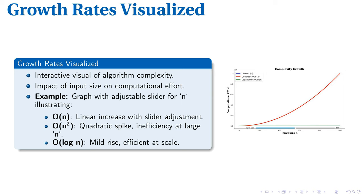Observe the O(N) complexity on this graph — notice the linear incline, showing that time requirements increase in direct proportion to N. In contrast, the O(N²) complexity graph skyrockets, indicating inefficiency as it expands. But the minimal slope for O(log N) complexity highlights an algorithm's resistance to input size, maintaining efficiency even as it grows. This visualization paints a clear picture of algorithm efficiency, crucial to navigating performance issues.